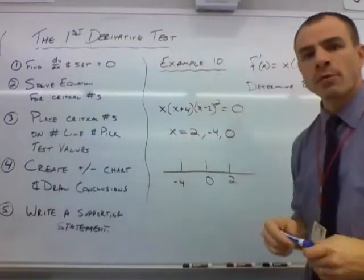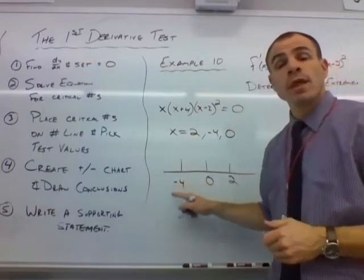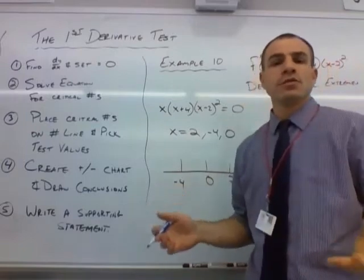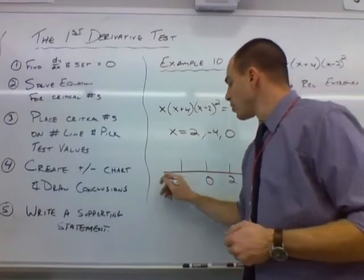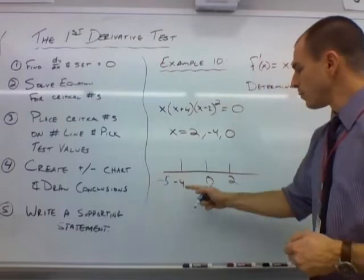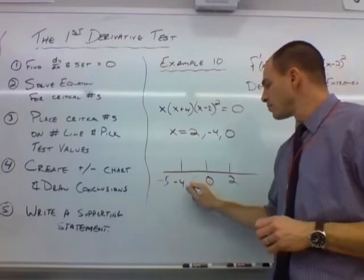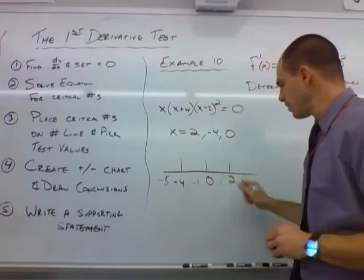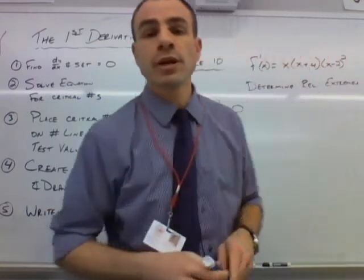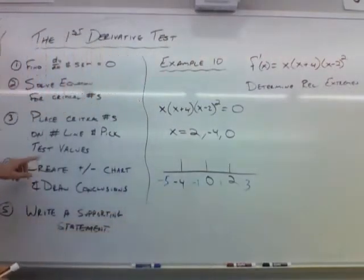We need a number to the left of −4; I'll follow the KISS method — keep it simple — and go with negative 5. For between −4 and 0, I'll choose −1. For between 0 and 2, I'll choose 1. And for after 2, I'll choose 3. We take these four test values and plug them into the first derivative to create a plus-minus chart. We're not interested in the actual value of the derivative — only the sign.